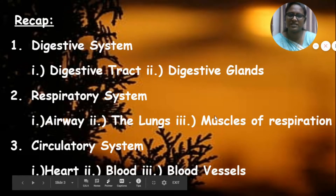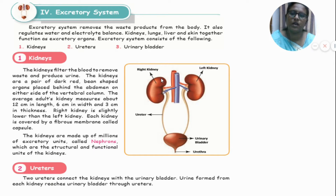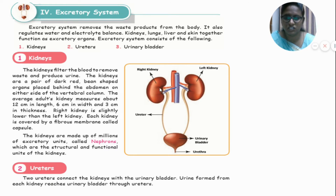Let's move on to today's topic: the excretory system. The excretory system removes waste products from our body and also regulates water and electrolyte balance. In the excretory system, we can see the kidney, ureters, and urinary bladder. The kidney is a bean-shaped structure that removes waste products from our blood and eliminates urine.